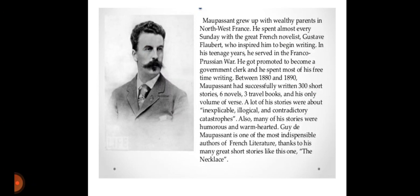Maupassant grew up with wealthy parents in northwest France and he spent almost every Sunday with the great French novelist Gustave Flaubert, who inspired him to begin writing. In his teenage years he served in the Franco-Prussian War. He got promoted to become a government clerk and he spent most of his free time writing. Between 1880 and 1890, Maupassant successfully written 300 short stories, six novels, three travel books and his only volume of verse.